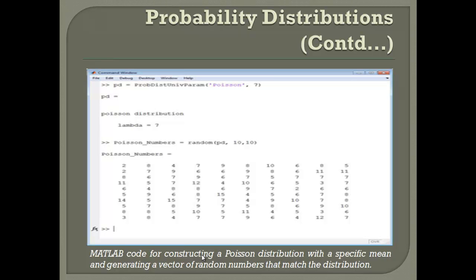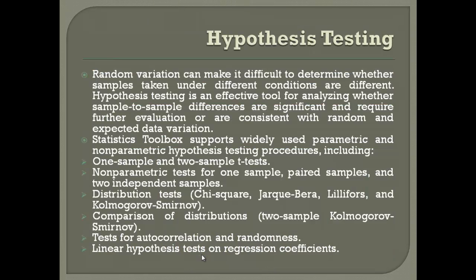We can also generate the distributions if we want to use a particular data. This becomes important in Monte Carlo simulation where we have a particular requirement of normally distributed values or log normally distributed values to run the Monte Carlo simulation. So we can pick all these values in a particular way. Look at this command: it says pd is equal to prob distribution object, univariate, and we have Poisson which is the first input, which is the kind of data that we are looking for, and the second is lambda which is seven. Then we have Poisson underscore numbers equals rand pd comma 10 comma 10, so that would give us this matrix of Poisson numbers.